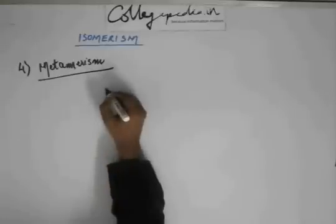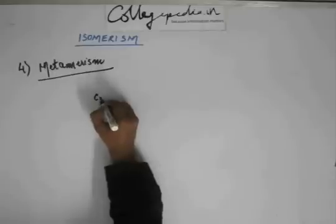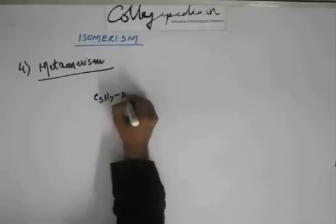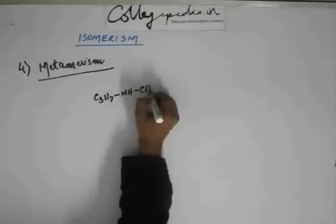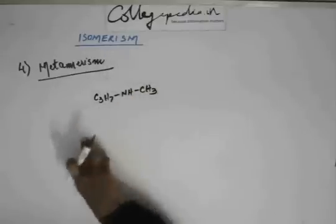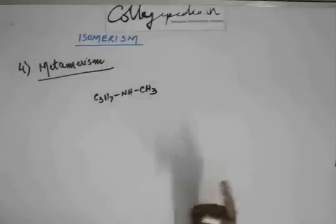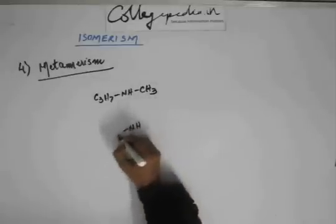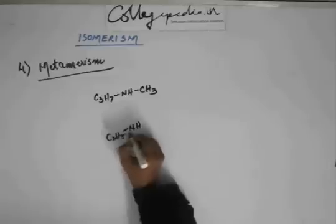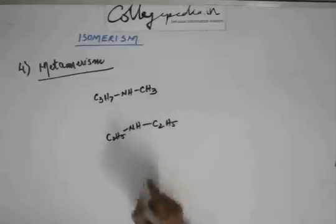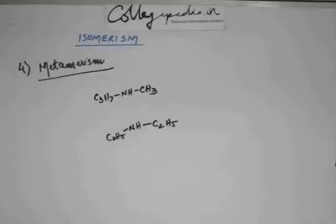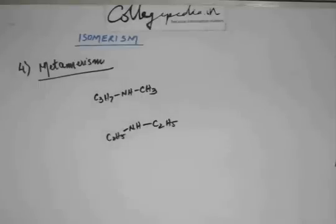For example, if you have a substituted amine — a secondary amine — if you have N-methyl-N-propylamine, then you can have a metamer: N,N-diethylamine. So these are metamers. If you have a heteroatom with a different distribution of carbons on both sides, that gives you a metamer.